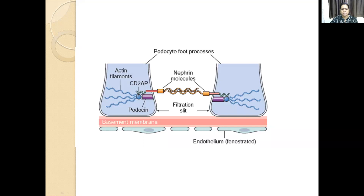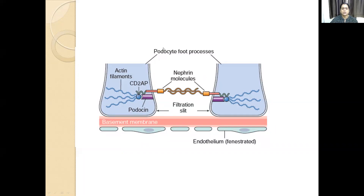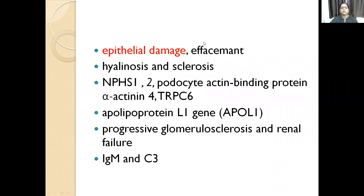The nephrin molecules are extracytoplasmic, associated with podocin, and actin filaments maintain the integrity of these foot processes. Any loss in this integrity will result in plasma protein leak, then hyaline formation — plasma protein insudation and hyalinosis formation — and to compensate for this, there will be extracellular matrix deposition. What happens is there is an epithelial damage — podocytopathy — then effacement like minimal change, then hyaline sclerosis.